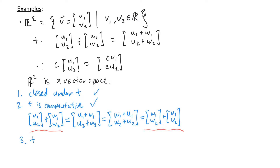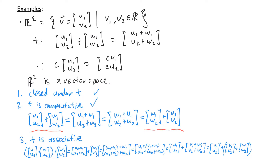We want to check that addition is associative. We have associativity because addition is associative with the real numbers — the reasoning uses associativity of real number addition at the key step. Since the left-hand side equals the right-hand side, addition is associative. As you can see, sometimes checking these properties can be a bit tedious. Let's continue checking our properties.